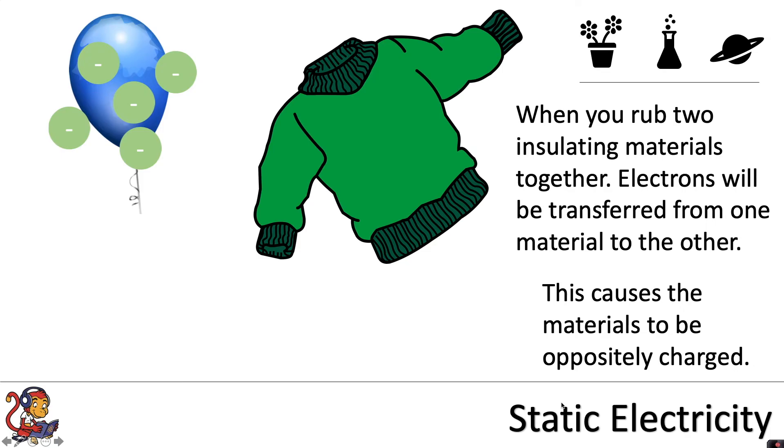It will depend on the material but let's say for example that in this case the electrons transfer from the jumper to the balloon. The balloon now has more electrons, and if you remember electrons are negatively charged, so overall the balloon will now be negatively charged.